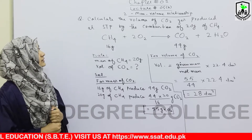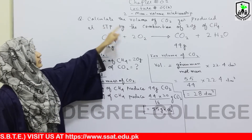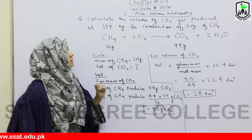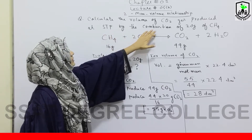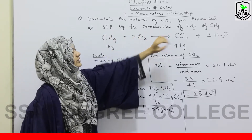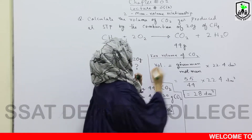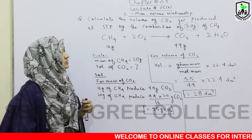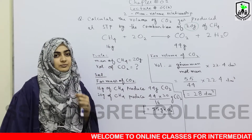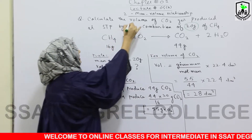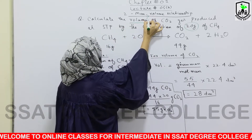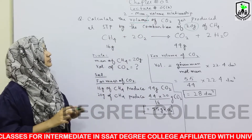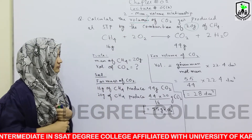अब जैसे यहाँ पर आपसे कह रहे हैं — calculate the volume. यहाँ आपको volume calculate करना है, produced at STP by combustion of 20 grams of CH4. 20 grams का मतलब है आपको gram mass की unit है, यानि कि आपको mass given है, और आपसे पूछा जा रहा है volume calculate करना। तो यहाँ पर आपको mass-volume relationship के थ्रू numerical solve करना होगा।